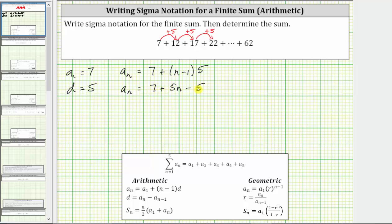Simplifying, notice seven minus five is equal to two, giving us a sub n equals two plus five n. Which means for a sigma notation or summation notation, using the variable n as the index,